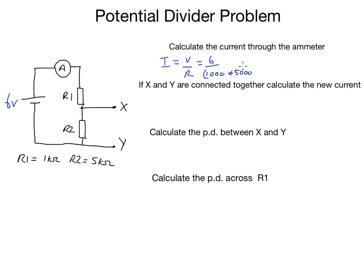Which is going to give us 6,000, leaving us with 6 divided by 6,000, or 1 times 10 to the minus 3 amps.